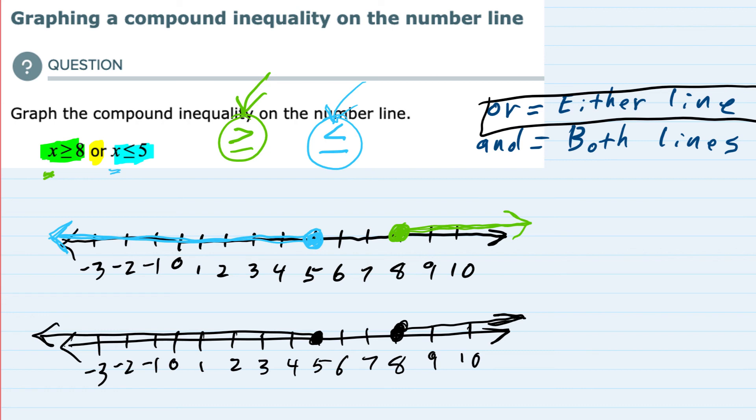Just to speak quickly about the AND part: if this had been an AND statement, it would be where they overlapped. In this example, since we have x ≥ 8 AND x ≤ 5, there would be nothing to graph because these two lines don't overlap. But if you had an AND example where there was an overlap area, that would be your final solution.